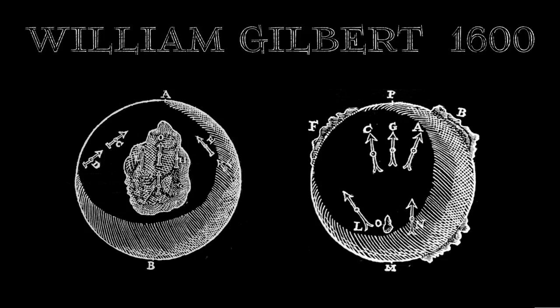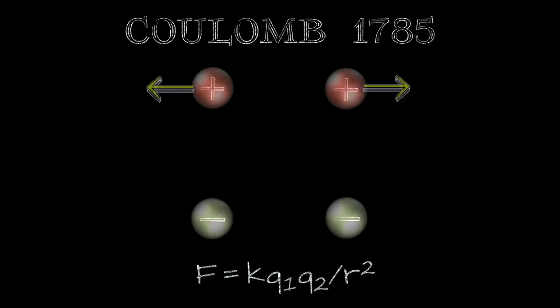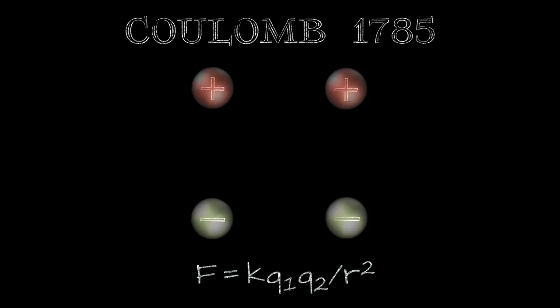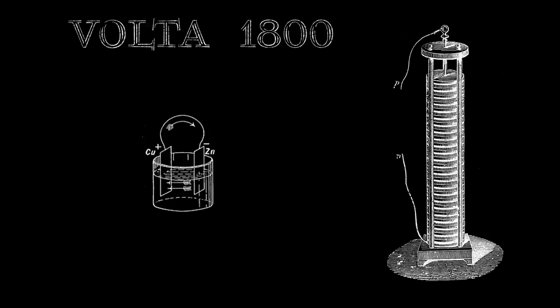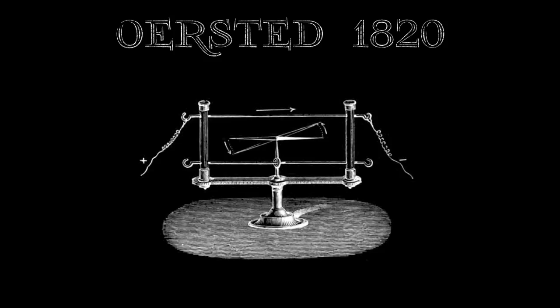Planet Earth itself acts like a giant magnet. There are two types of electric charge that we named positive and negative. Like charges repel; unlike charges attract. Certain combinations of materials, when brought together, result in a flow of charge, so we can construct batteries that can make electrical current travel continuously through closed conductive paths, called circuits.